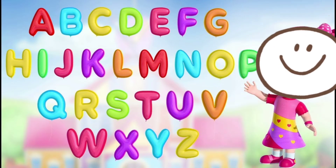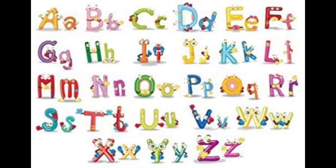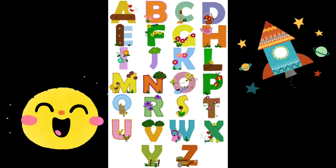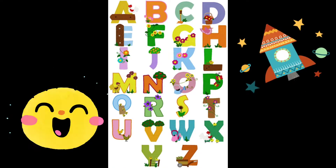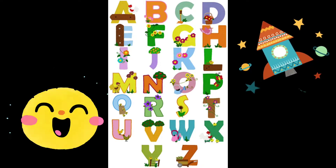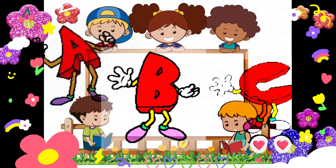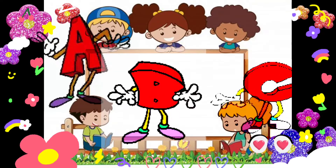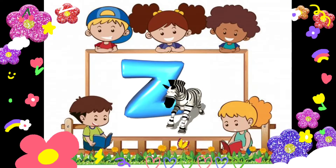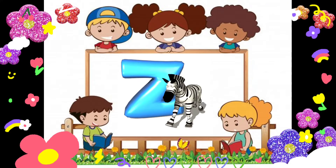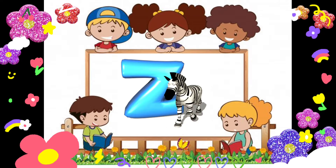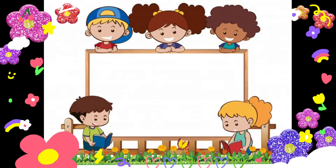The alphabet is filled with consonants and vowels. We write them, we read them. Each letter makes a sound. Well, we start with A, B, C. We go all the way to Z. The letters of the alphabet are fun for you and me.